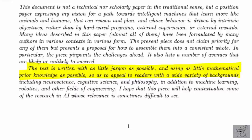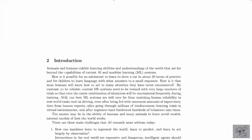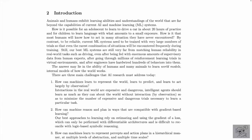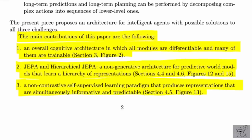He also says the text is written with as little jargon as possible and using as little mathematical prior knowledge as possible, so as to appeal to readers with a wide variety of backgrounds. I don't want to actually go through the whole paper because it's 69 pages long, but I'll present the core piece — which is the JEPA architecture — and just a little bit around that so you know what's going on.